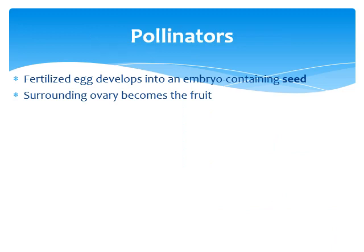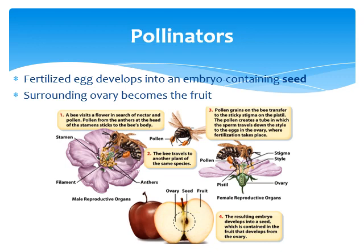Pollinators take pollen from one flower to another, transferring it from the male to the female so a fertilized egg develops into an embryo containing a seed. A bee visits a flower in search of nectar and pollen, and the pollen from the anthers at the head of the stamen — the male reproductive structure, containing a filament and anthers — sticks to the bee's body. That's where the bee picks up pollen.